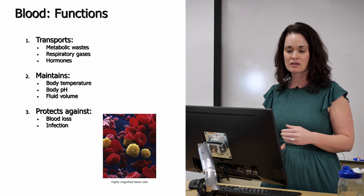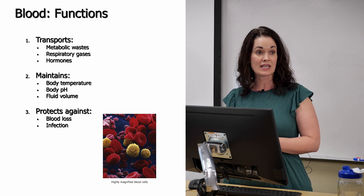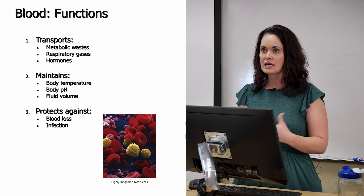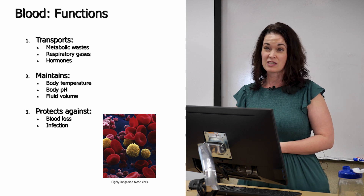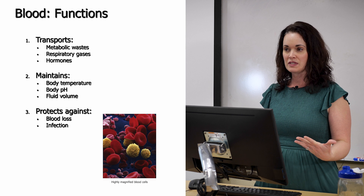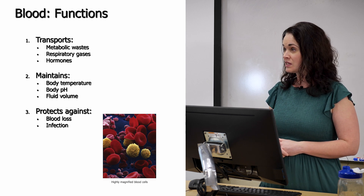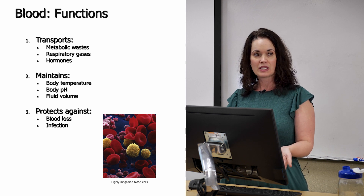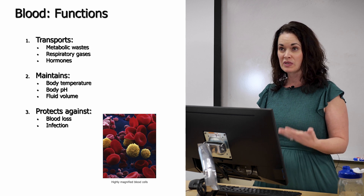Blood is also very good at maintenance. Its temperature is higher than body temperature, helping to regulate and keep it consistent — it acts as a heat sink. When you go outside in the cold, your skin gets pale because blood is being sent to the core to keep it warm. When you're hot or exercising, you appear flushed because blood is sent to the surface to release body heat. Blood also maintains fluid volume through proteins that hold fluid in the blood, which is critical for maintaining blood pressure.